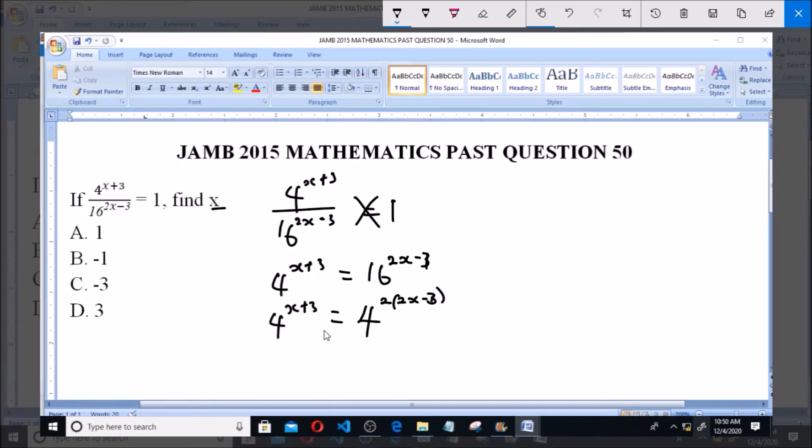Now adding this, the parent numbers can be the same, so we can then cancel out. So we'll be having x plus 3 equals 2 times 2x minus 3. Now x plus 3 equals 2 multiply by 2x, which is 4x, multiply by minus 3, which is minus 6.